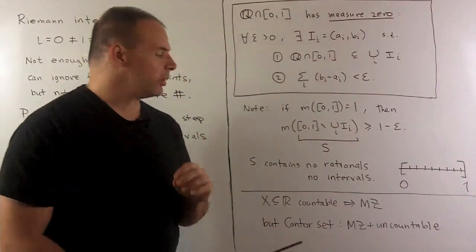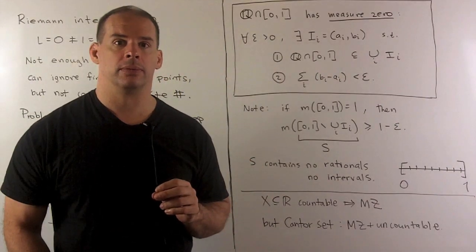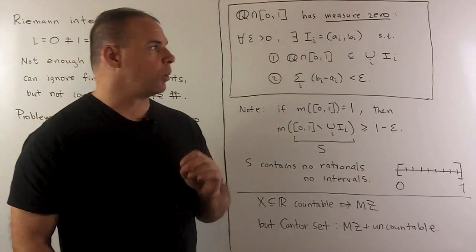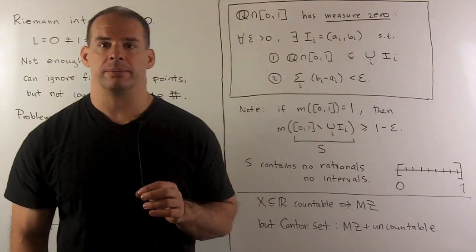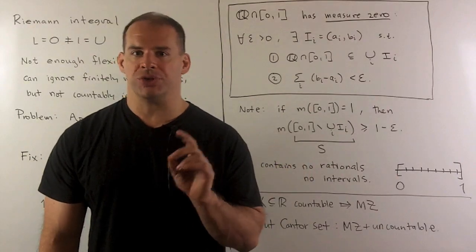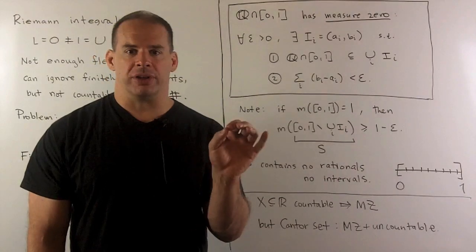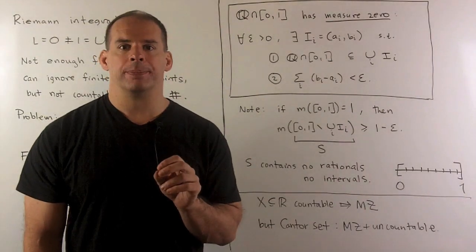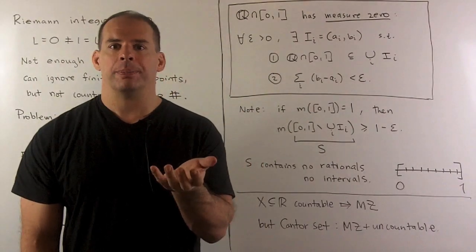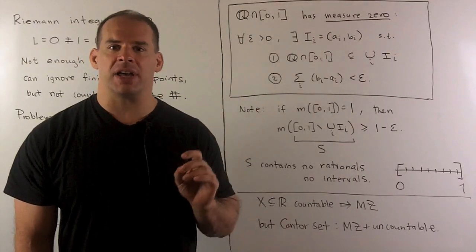If a set contains an open interval, that set cannot be measure zero — we won't be able to get epsilon below the length of that interval. On the other hand, any countable subset of the real line is measure zero. We also have the Cantor set as an example of measure zero, and the Cantor set is uncountable. The set of rational numbers in the closed interval zero one is somewhat non-intuitive: we can find an open cover of our set that doesn't cover the closed interval zero one. The rationals form a dense set, yet when we put all those open intervals together they don't cover the larger closed interval.